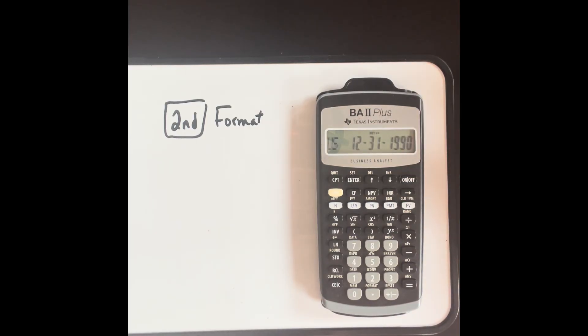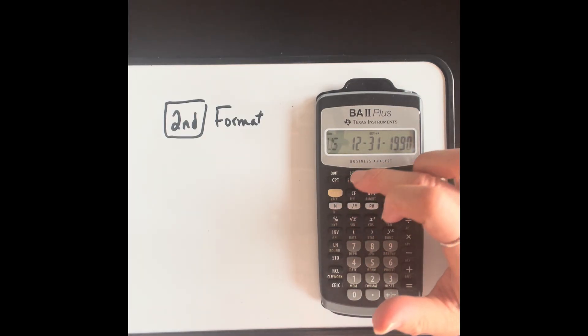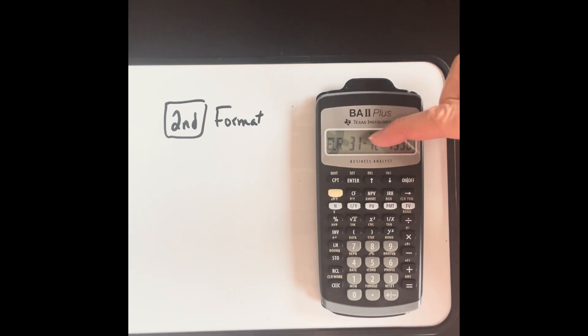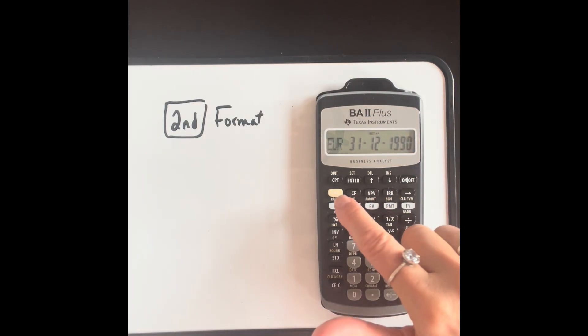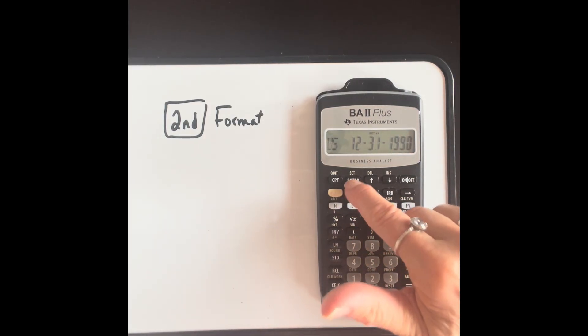The other option is European. To get to another option, you press second and set. Now you can see it's day, month here. I'm going to get it back to US. Just go second, set again.